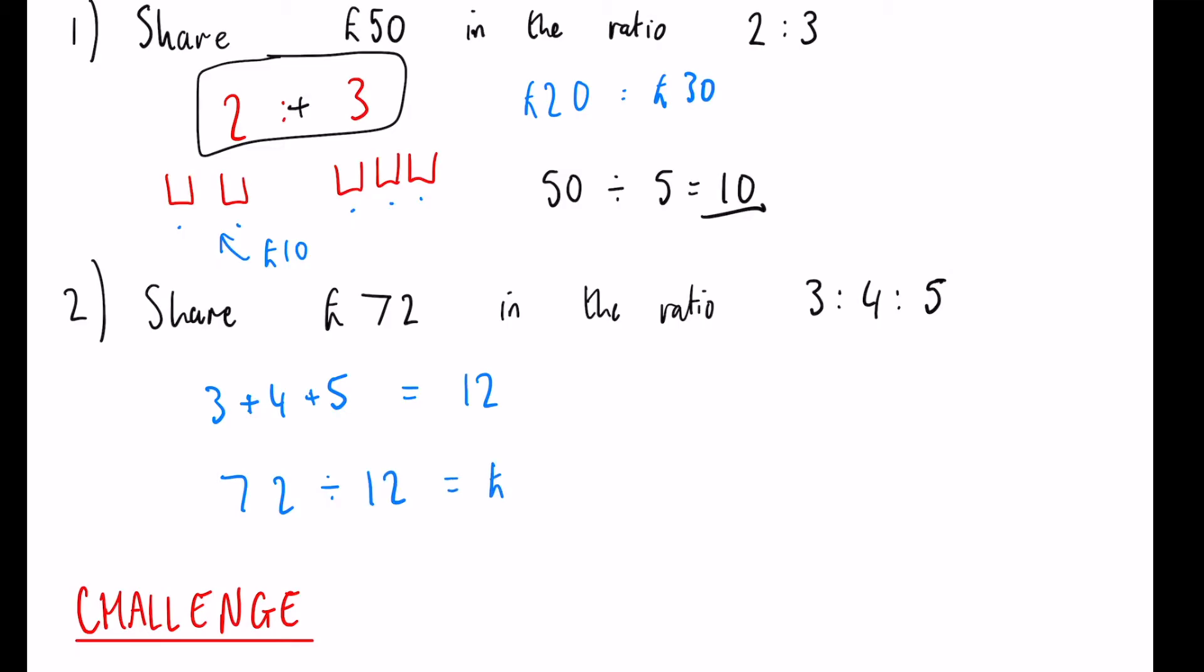So we need to do 72 divided by 12, and we see that must leave us with £6. So that means in those buckets, each bucket has £6 in it. That means we need to multiply 3 by 6, 4 by 6, and 5 by 6.